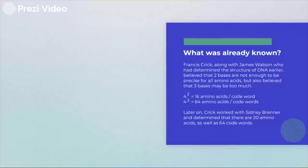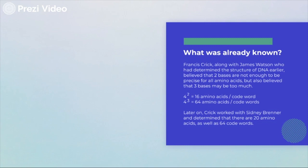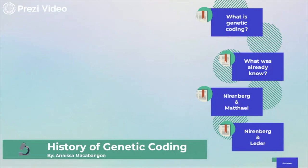Prior to the studies done by Nirenberg, Matthaei, and Leder, there was some knowledge of genetic coding. Francis Crick believed that two bases are not enough to code for all amino acids, but also believed that three may be too many. No one knew how many amino acids there were to code for, until Crick and Sidney Brenner later determined that there are 20 amino acids and 64 code words.